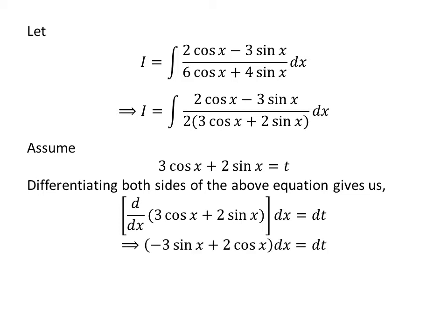As the derivative of cosine of x is minus sine of x and the derivative of sine of x is cosine of x, so minus 3 times sine of x plus 2 times cosine of x times differential of x is equal to differential of t.